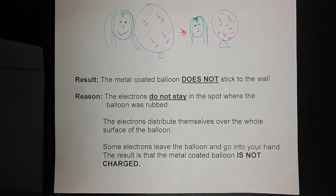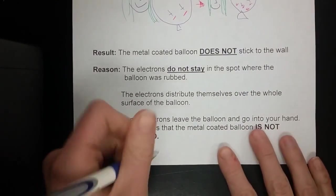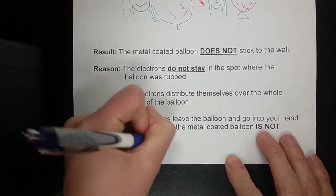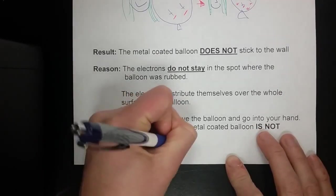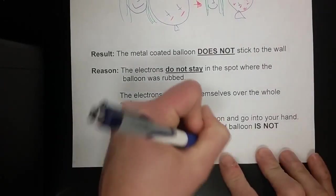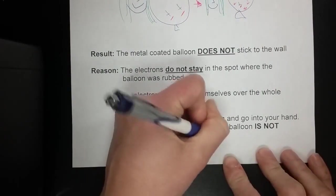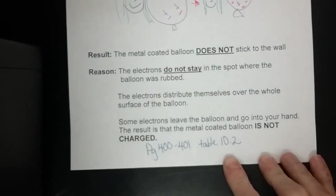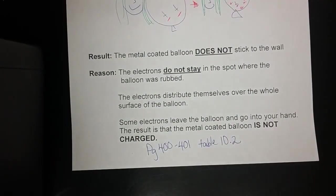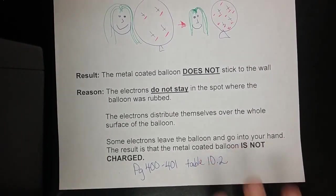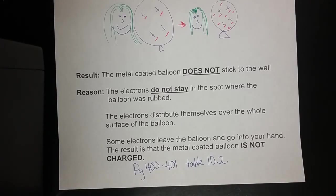What you're going to do now is go to page 401 in your textbook. There's a chart there, table 10.2. You're just going to make that table along with your notes that lists all of your conductors and insulators. That is the end of conductors and insulators, and that will lead us into our next activity in class.